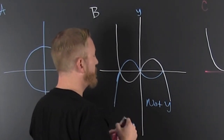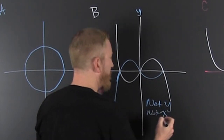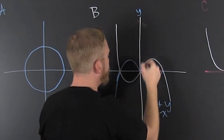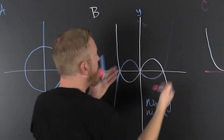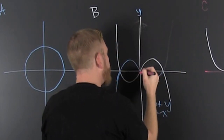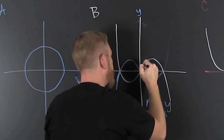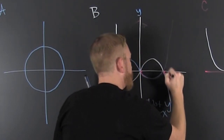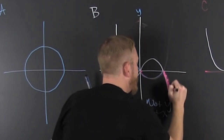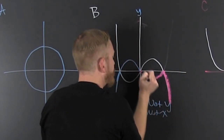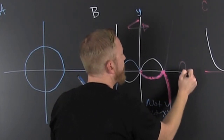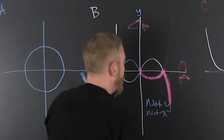But if I flip it about y — bam! And then if I take that and flip it — boom! It lays right on itself. So what did I do? I first flipped on y — bam! And then I flipped on x — bam! And it lays on top of itself. So this is origin symmetric.